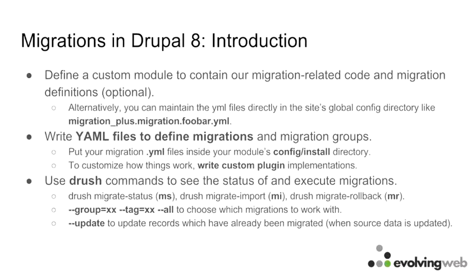We don't have a UI for Migrate yet, so there are no progress bars. We use Drush commands to manage migrations. The first is `drush migrate:status` — it shows a list of records in the source, how many have been imported into Drupal 8, and how many rows are unprocessed and still need migration. You'll be using it a lot if you do migrations to Drupal 8.